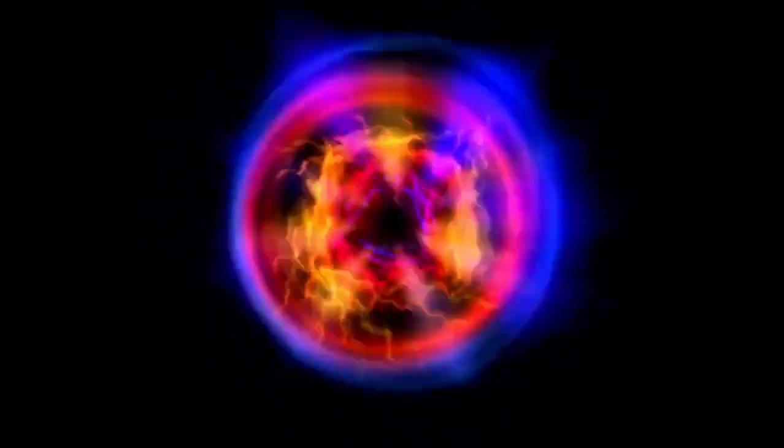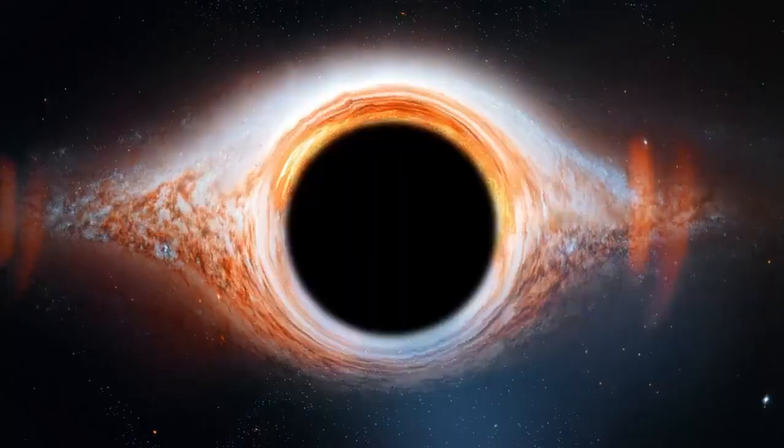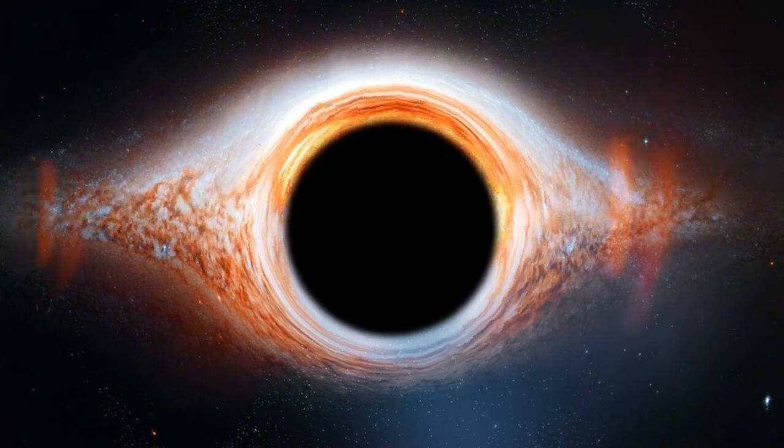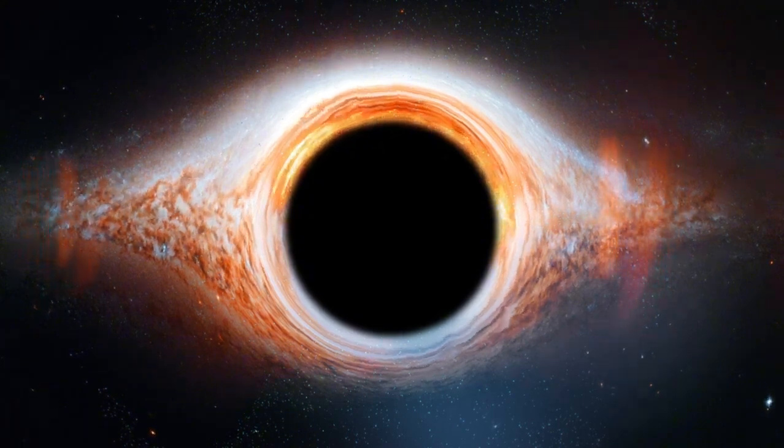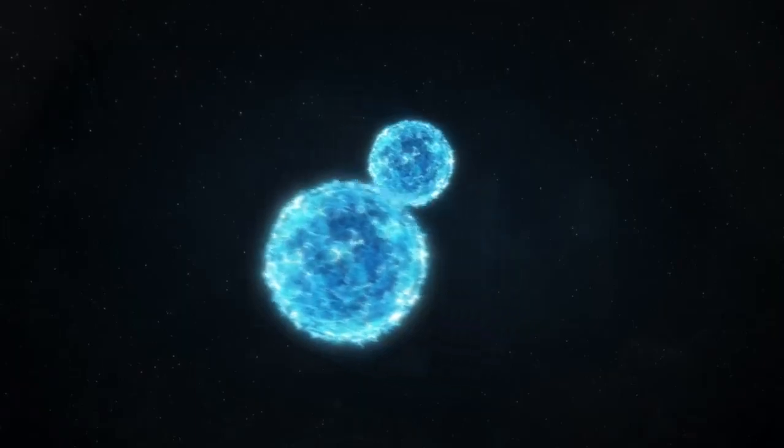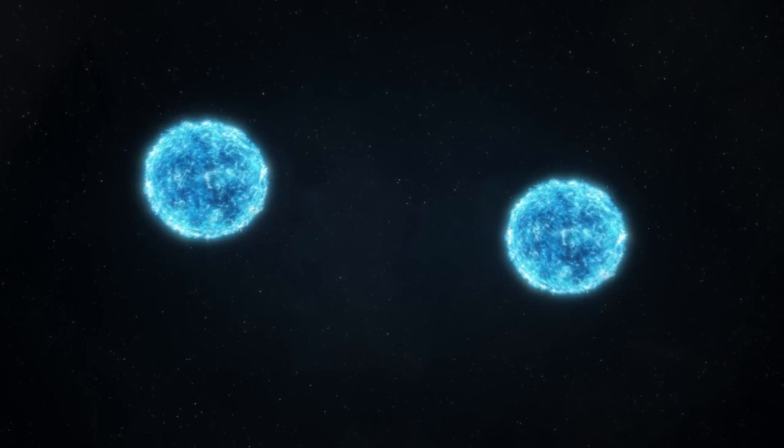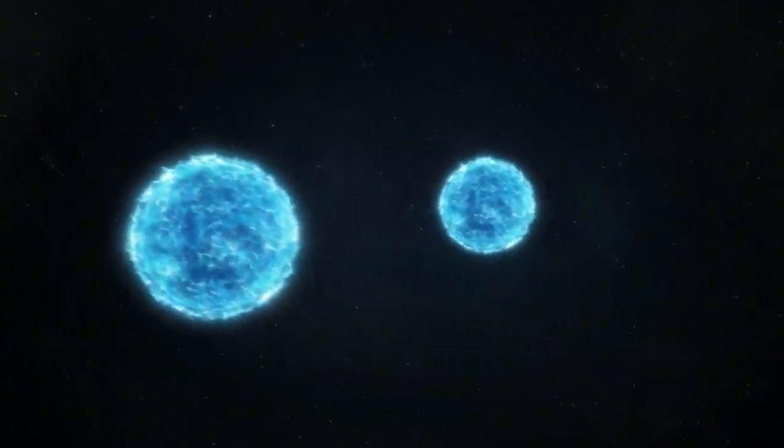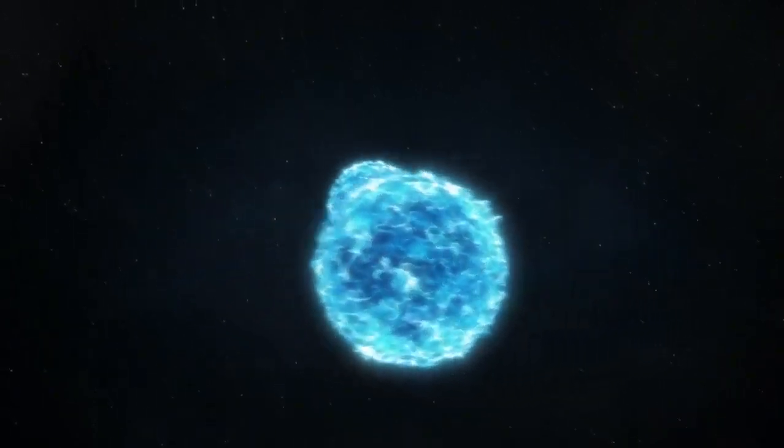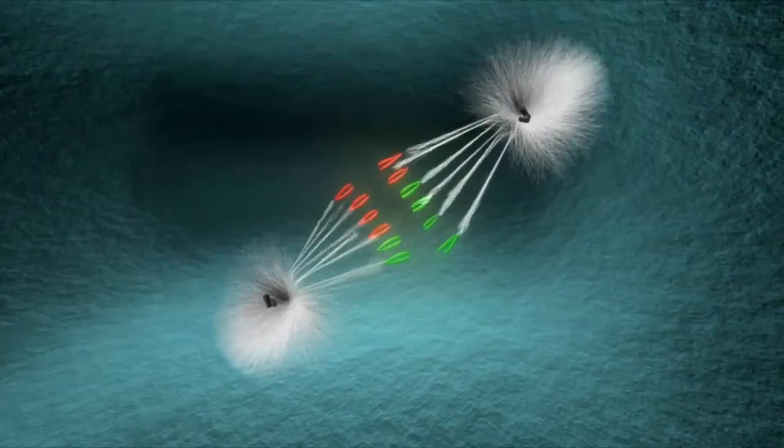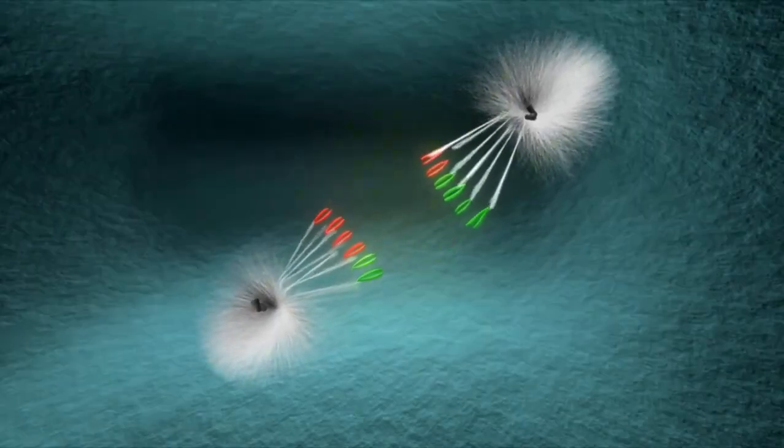But what happens after a star like Betelgeuse goes supernova? As we stand on the brink of the Betelgeuse supernova, it's like we're in a front row seat for cosmic history. But what's going to happen to this star? Well, there are a couple of possibilities. One scenario is that the core collapses, giving birth to a neutron star, a super dense and fascinating object. Another possibility is that Betelgeuse's core becomes so massive that it forms a black hole, a place where even light can't escape.